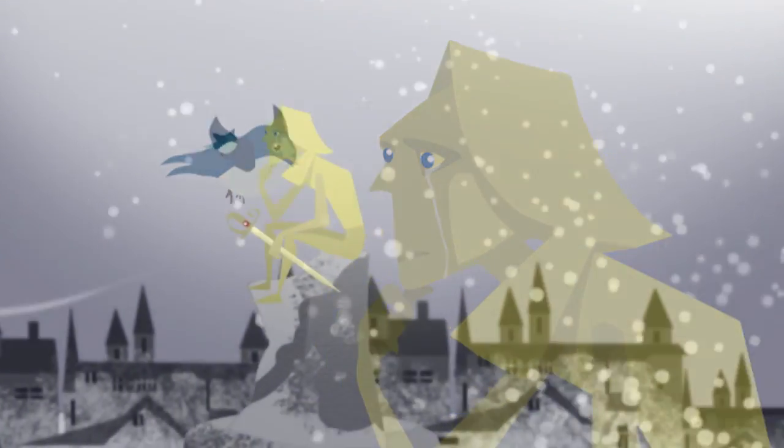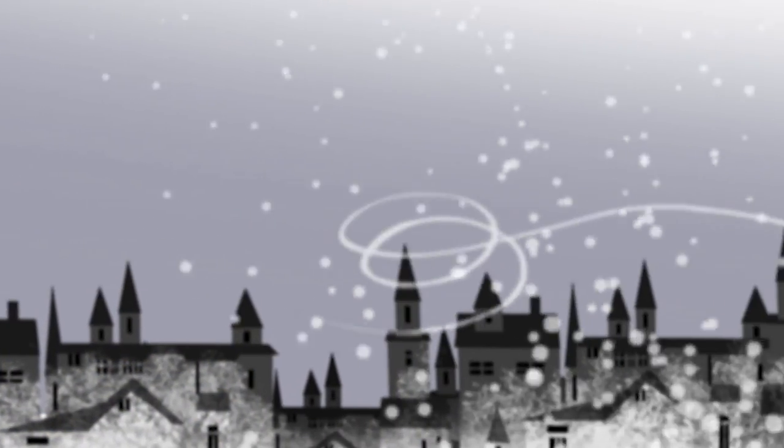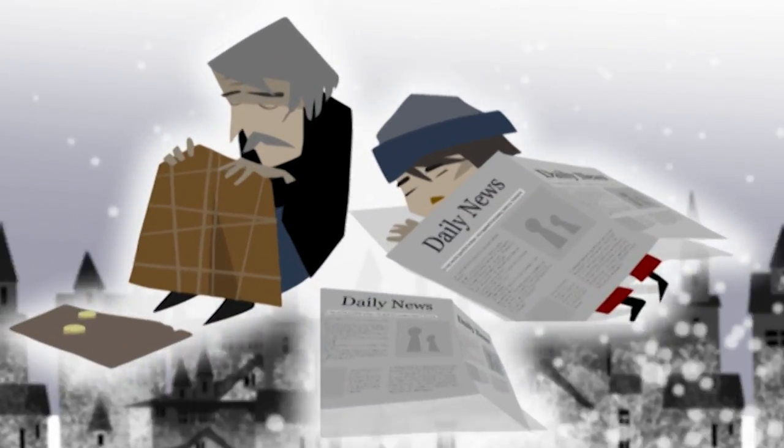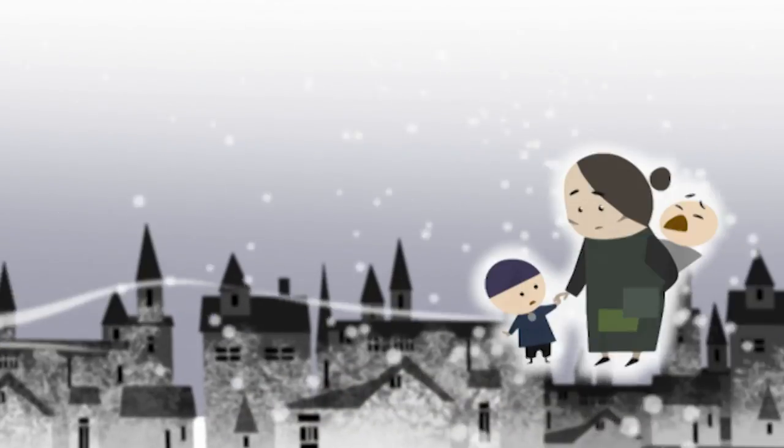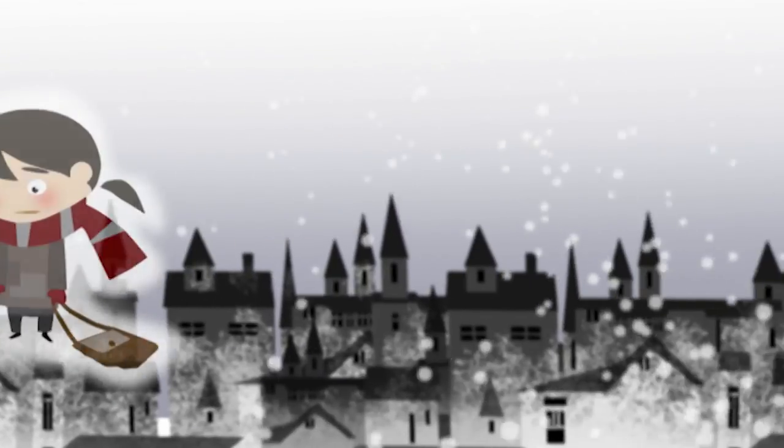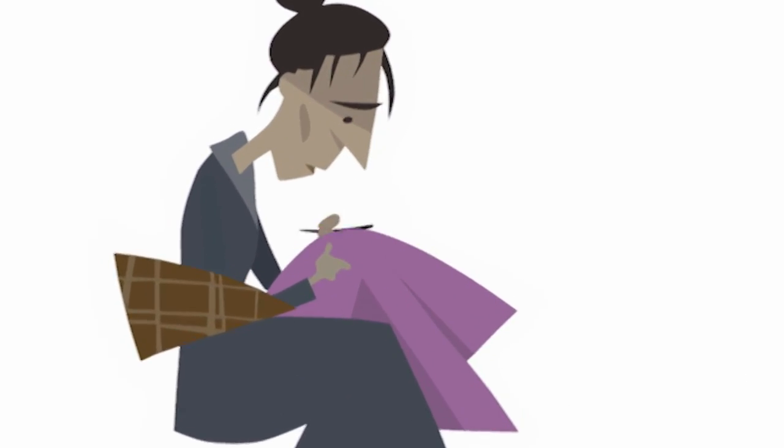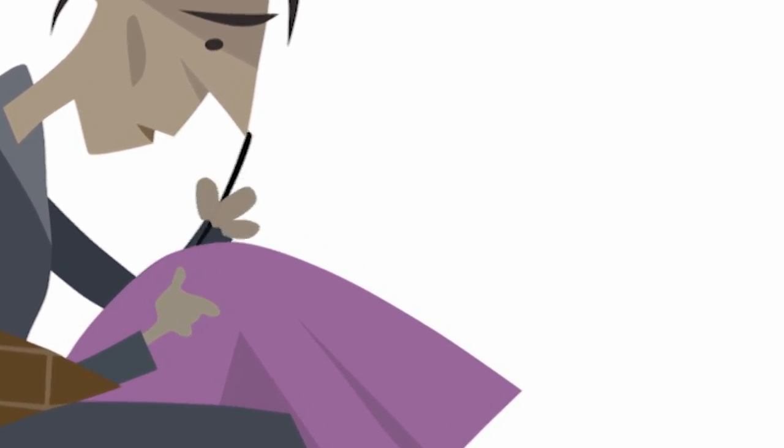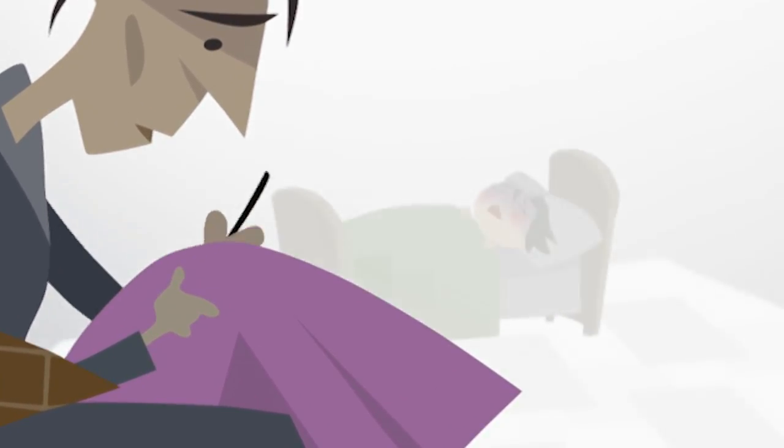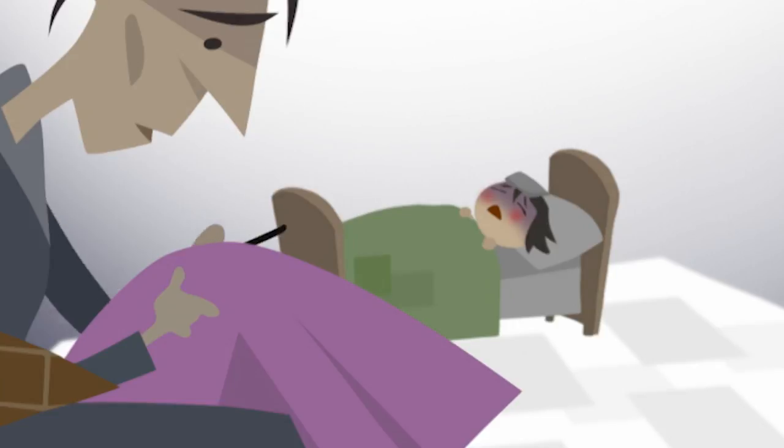The statue explained that from his lofty vantage point he could see into every corner of every house in the town, and many of the things he saw made his heart truly ache. That night he saw a poor woman, thin and drawn, toiling over a gown for one of the queen's maids of honour. In the corner, the woman's son sweated with fever.